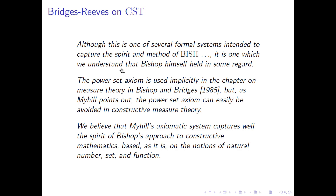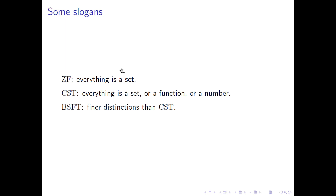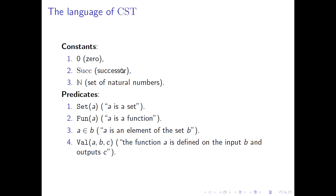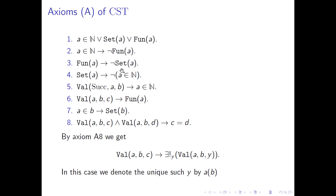Some slogans: in ZF, everything is a set; in CST, everything is a set or a function or a number; and in Bishop's sets and function theory, things are a bit more refined. Let's take a look at CST. We start with a predicate logic with equality, and we have some constants — zero, successor, natural numbers — and some predicates. Something is a set, a function; A is an element of a set B; and the function A is defined on B and has value C. So it permits partial functions, and partial functions are very crucial to this system.